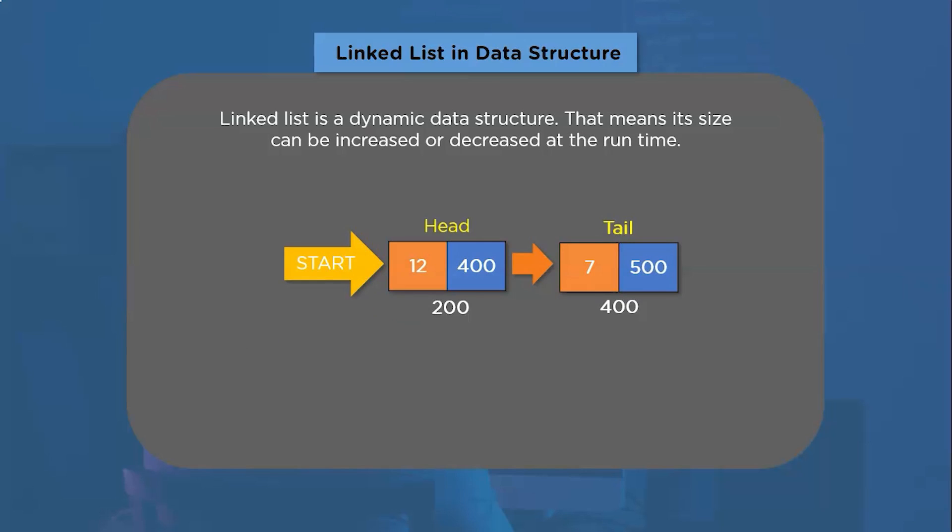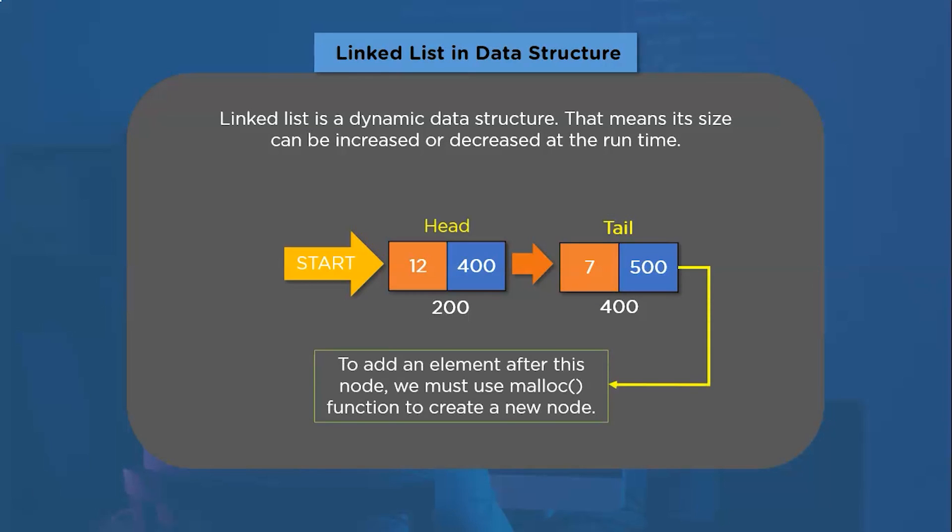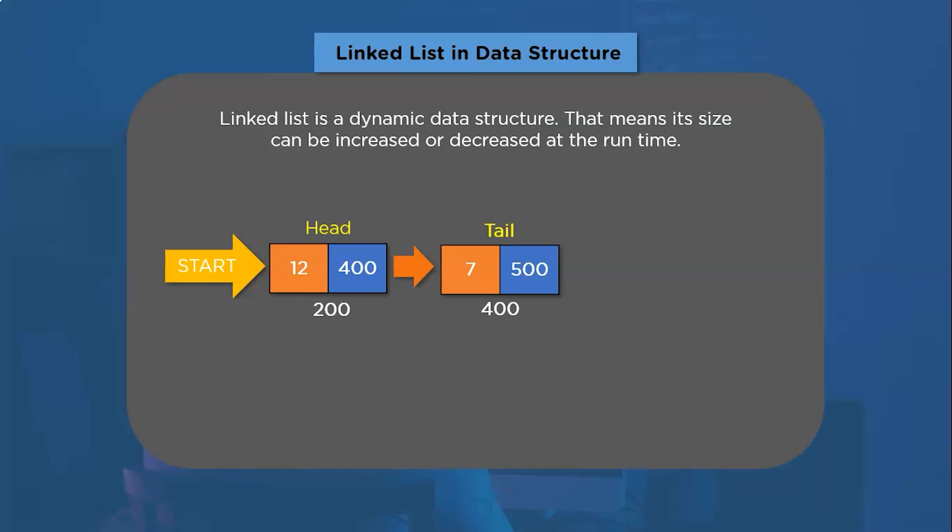That means we can either decrease or increase the size of the linked list at any instance in our program. For increasing the size of linked list, we use the malloc function in C programming language. Malloc is a library function that allocates a block of memory on the heap. The program accesses this block of memory via a pointer that malloc returns.